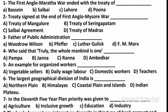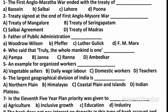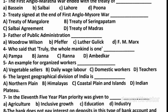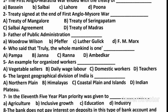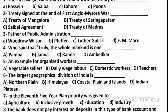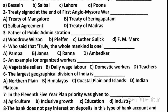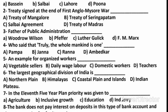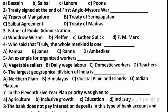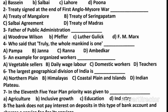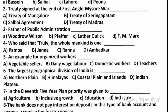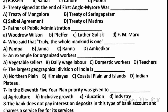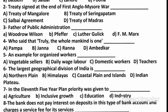Question 5: An example for organized workers — A. Vegetable Sellers, B. Daily Wage Labor, C. Domestic Workers, D. Teachers. Answer: Teachers.